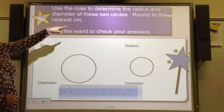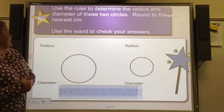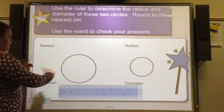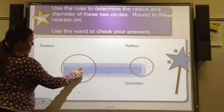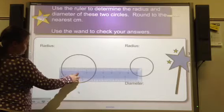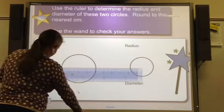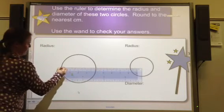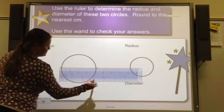Using the ruler to determine the radius and diameter of these two circles round to the nearest centimeter. So again, showing you with the ruler. And again, I'm estimating to find that center point of the circle. So I'm going to estimate that the diameter of this circle is 4. So we go from here to here and you see that is 4.